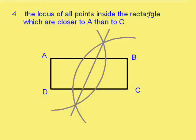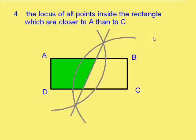So if we want the points which are closer to A than C, we have to shade that region. It's inside the rectangle, and every point in the green region is closer to A than to C. Once again, don't rub out the construction lines.